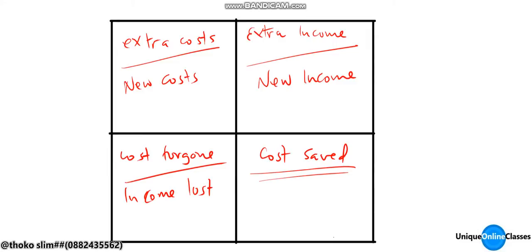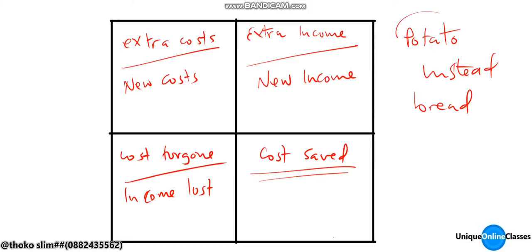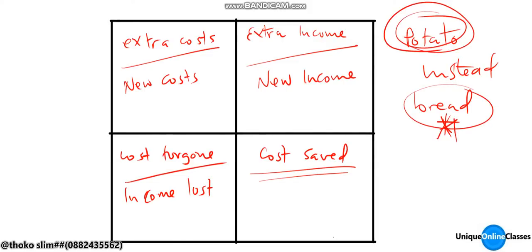For instance, we have decided to buy potato instead of buying bread. So we have saved the cost of bread and we have incurred a new cost of potato.